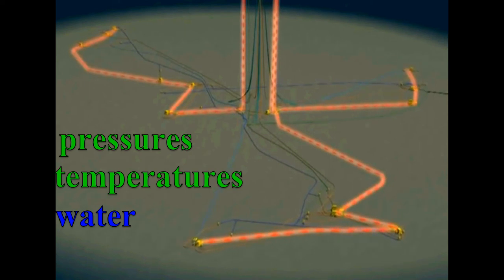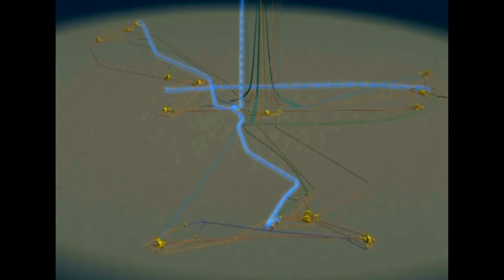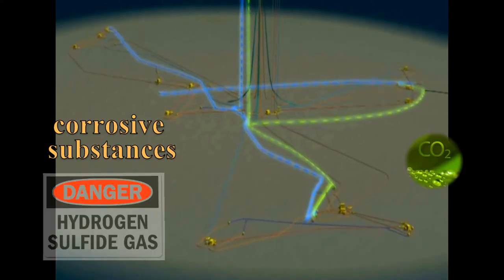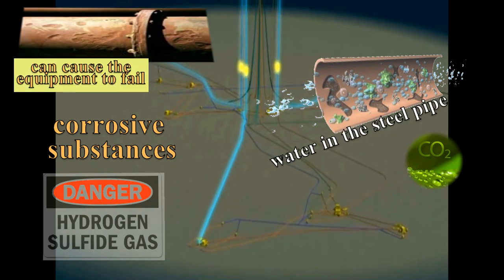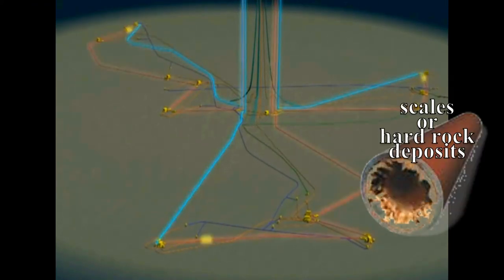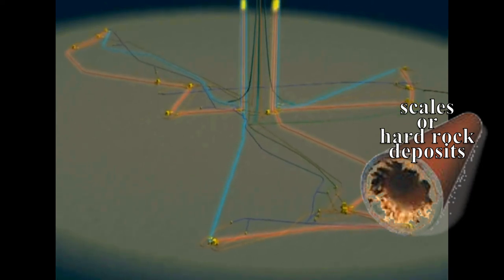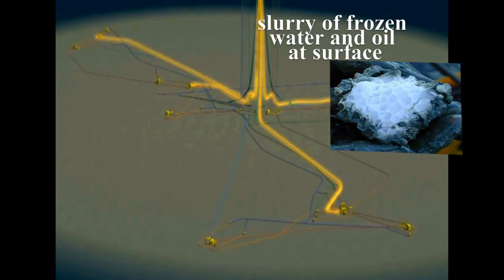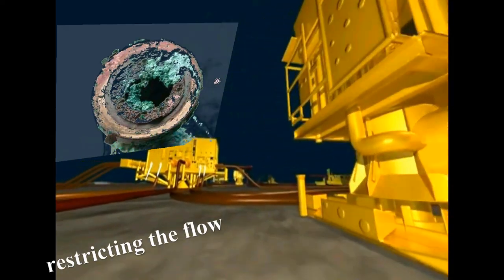Pressures, temperatures, and water levels in the reservoir must be monitored and controlled. Corrosive substances like H2S gas, CO2 gas, and water in the oil can destroy the steel pipe, eventually causing the equipment to fail. In addition, the production of scales or hard rock deposits that build up on the inside of the pipes and valves, and hydrates — a slurry of frozen water and oil at the surface — can also cause problems by restricting the flow of the hydrocarbons.